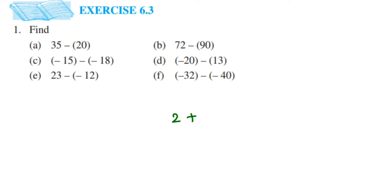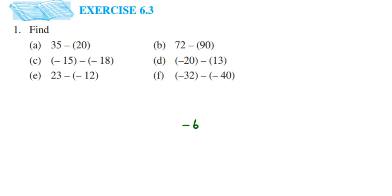Similarly, if I take a positive number like 2, what is the additive inverse of 2? We need to find what to add to 2 to get 0. If I add minus 2, both numbers cancel out and we get 0. So the additive inverse of 2 is minus 2. In general, the additive inverse of any number is the same number with the opposite sign. For example, the additive inverse of minus 6 is 6, and the additive inverse of 11 is minus 11. We need this concept to subtract integers.